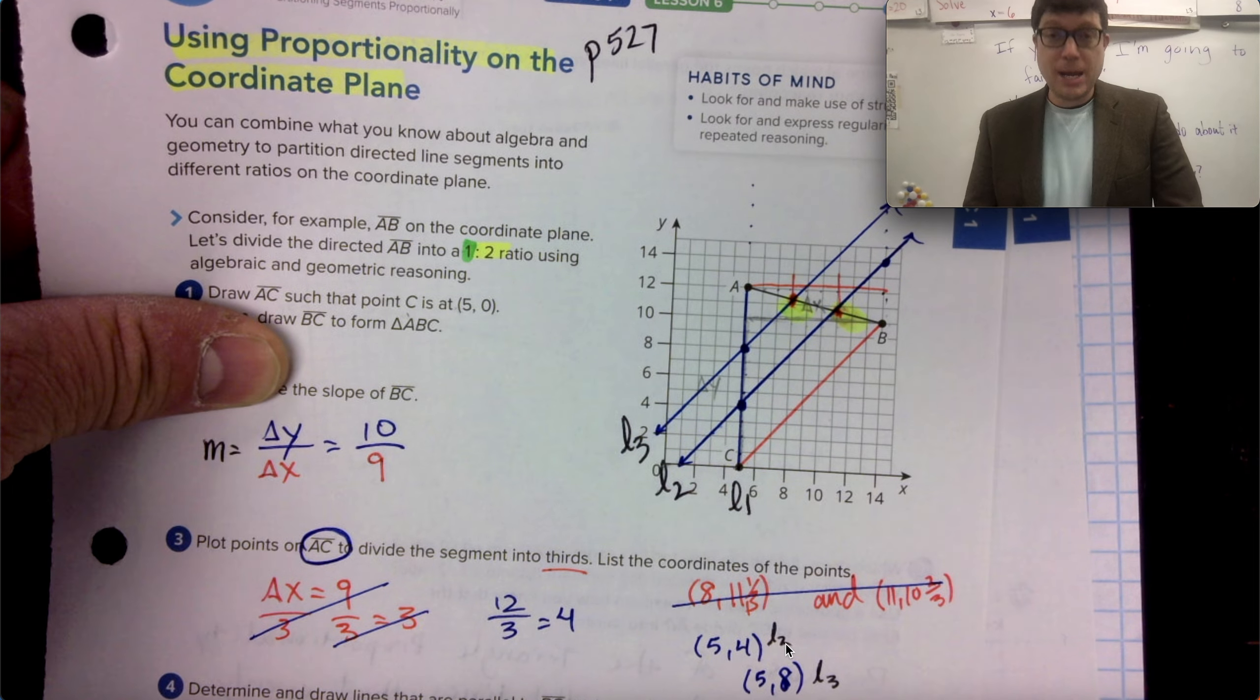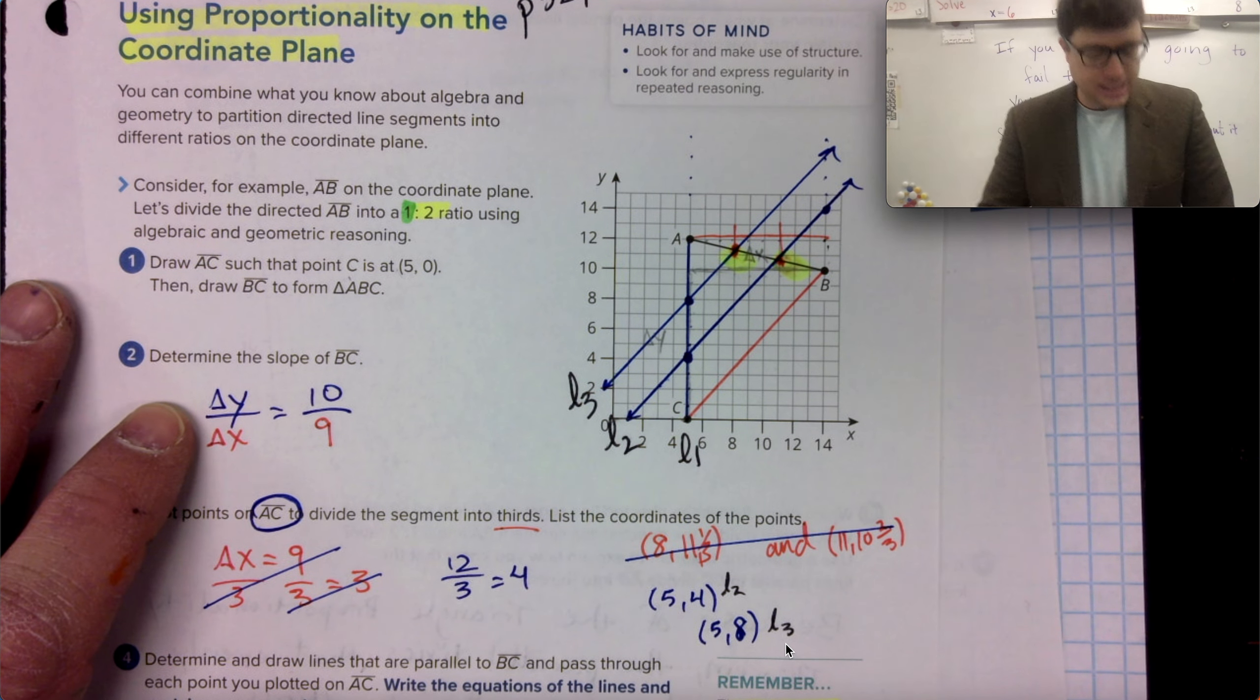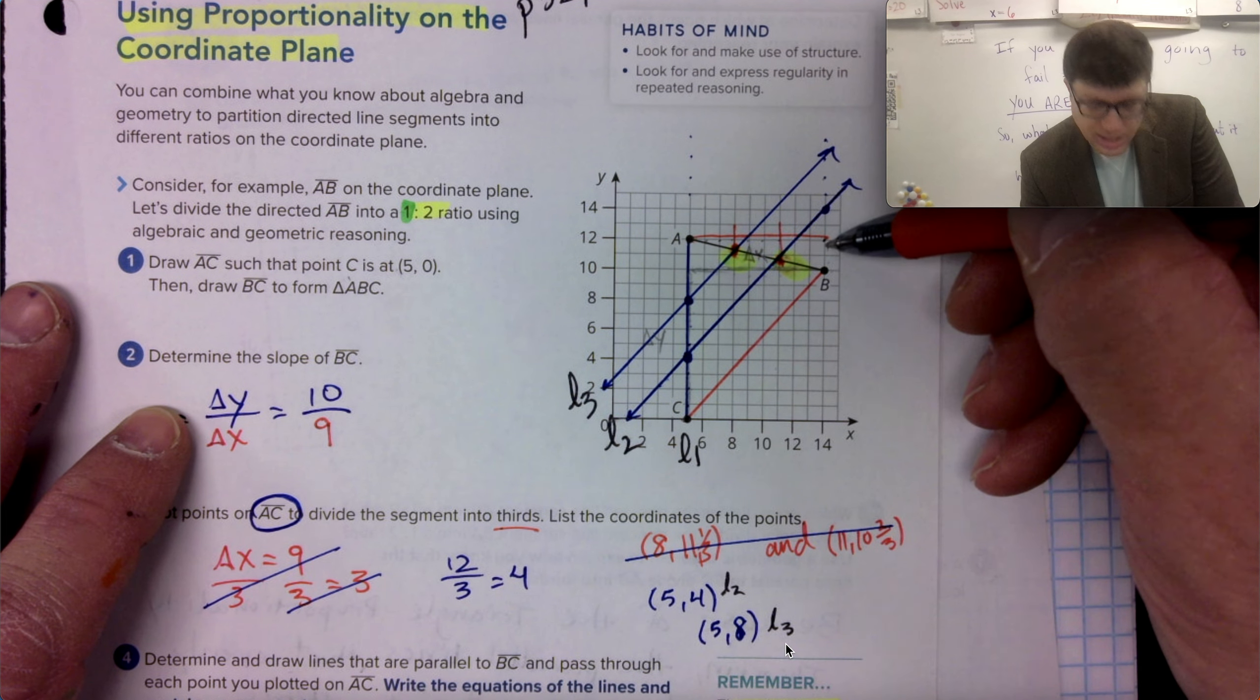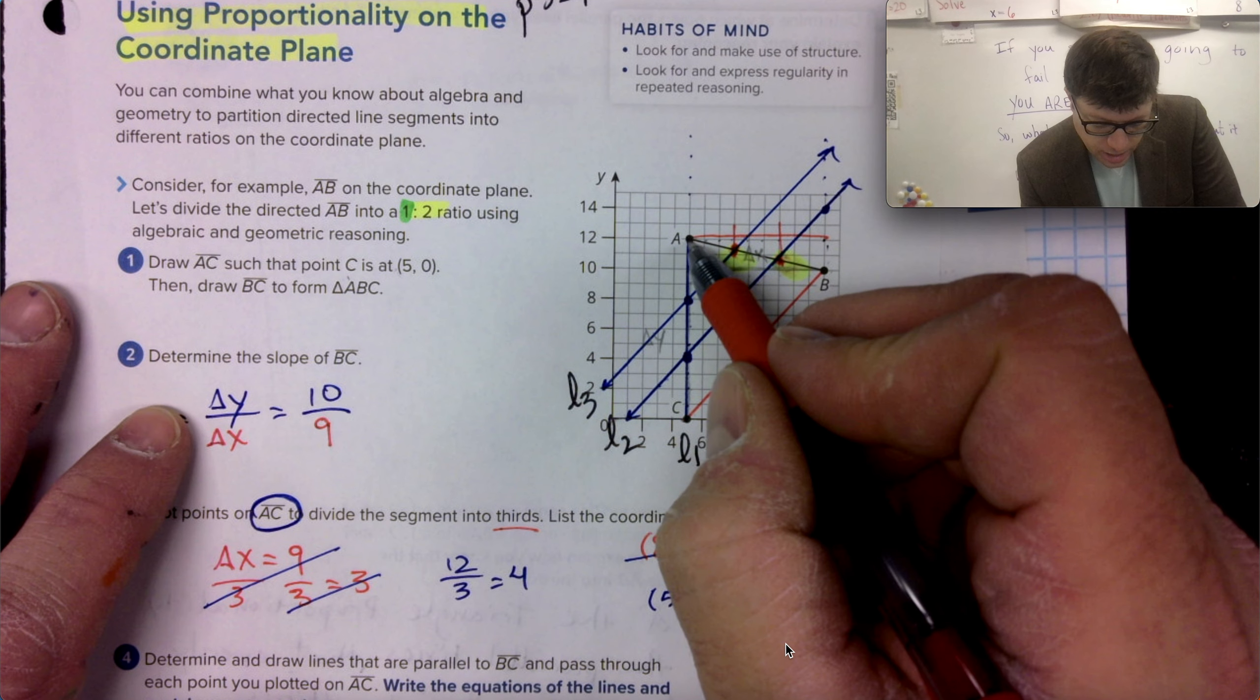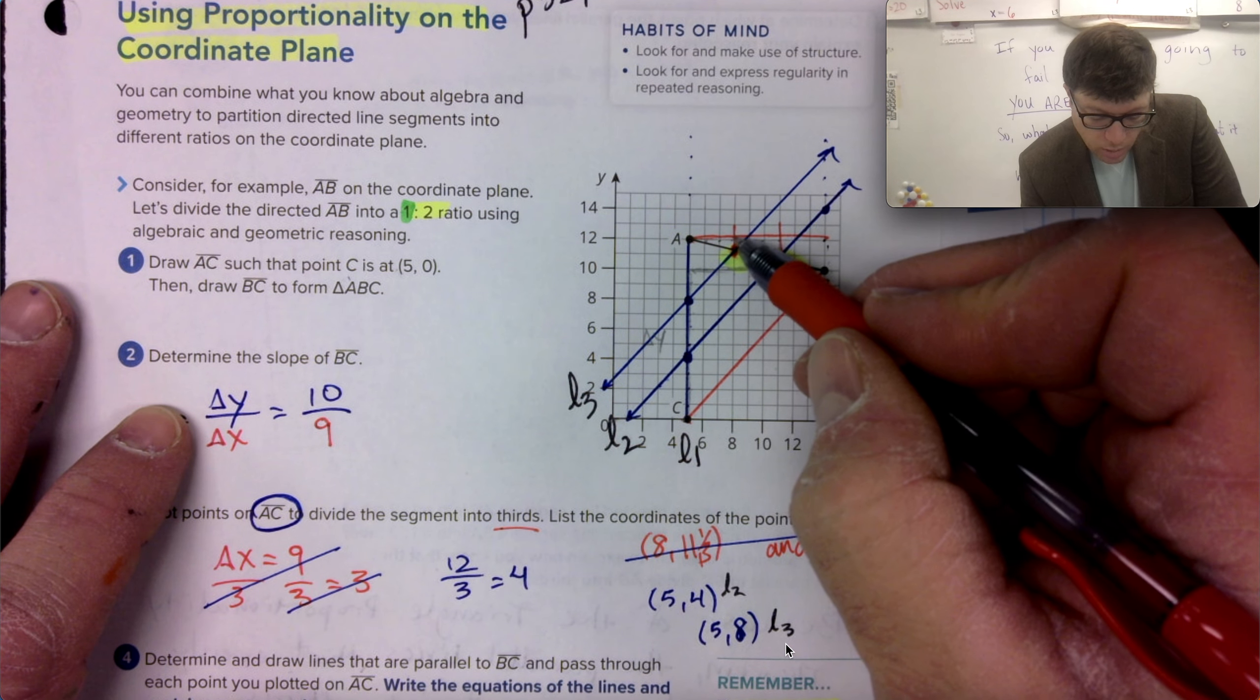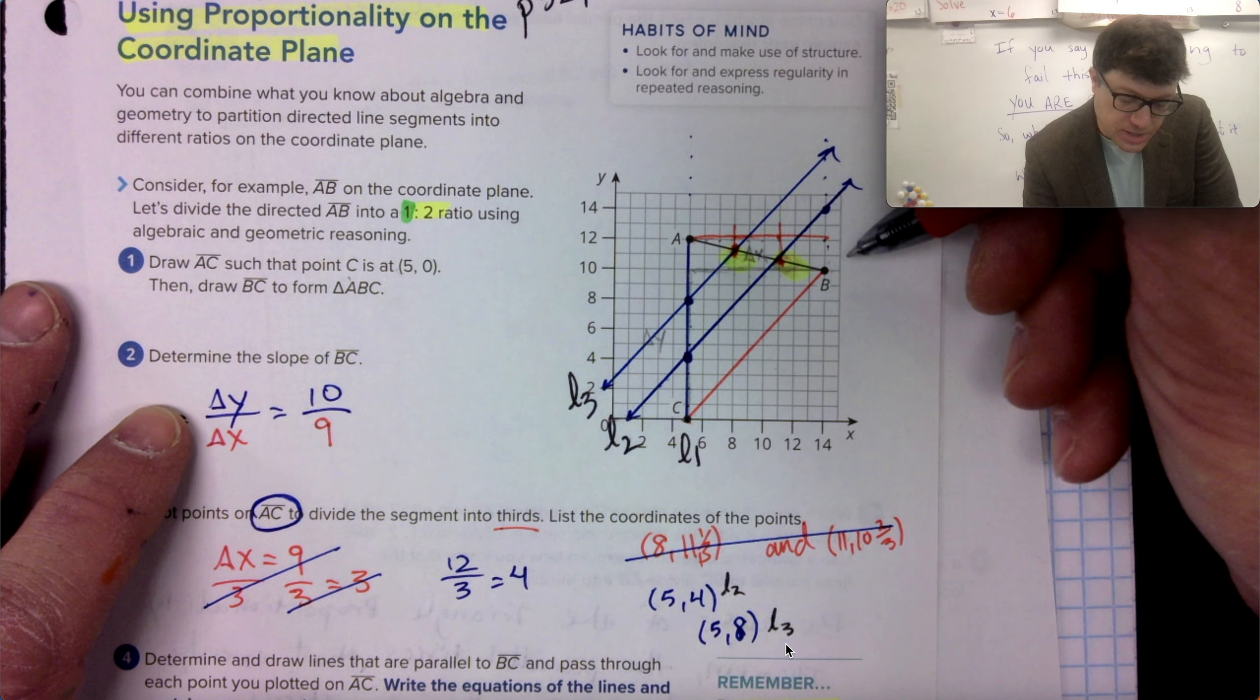And I'm going to say geometrically, check this out. I know where the X coordinate is because the X coordinate is three spaces. This was a distance of nine, right? The X coordinate is three spaces over from five. And then the next X coordinate is three more spaces over from that one or vice versa going the other way.